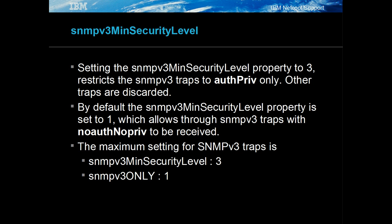However, this setting allows traps to be received that have no user or password set. To allow only SNMP v3 traps with the correct user and password, set the SNMP v3 min security level property to 3.